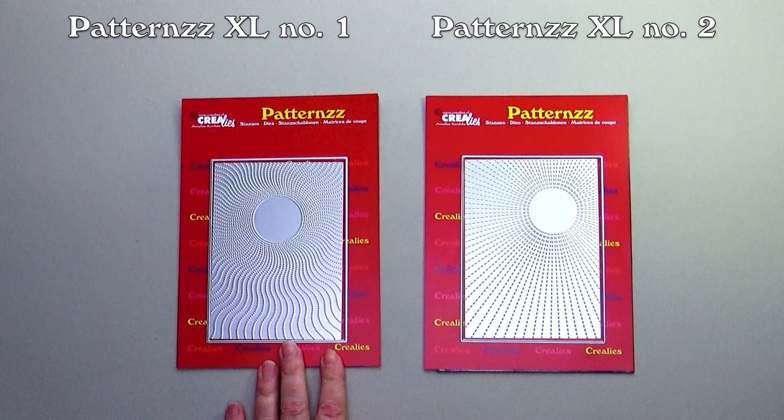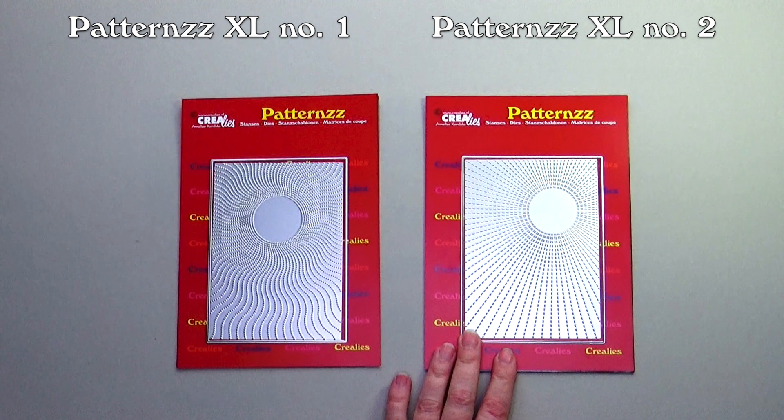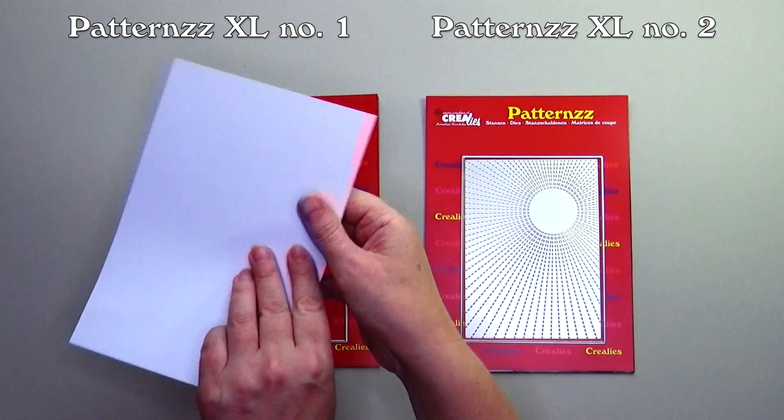Patterns XL number 1 is a dotted sun. Patterns XL number 2 is a stitched sun. The inner die prints the sun in your paper.